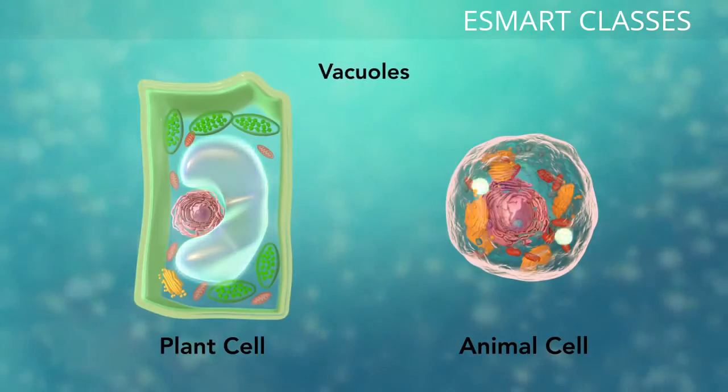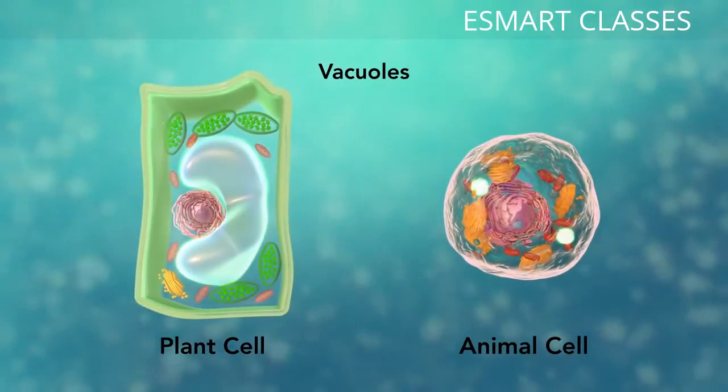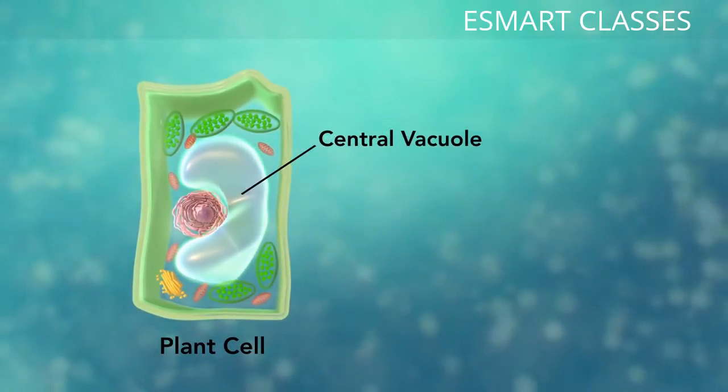Vacuoles are sac-like structures that store different materials. Here, in this plant cell, the central vacuole stores water.